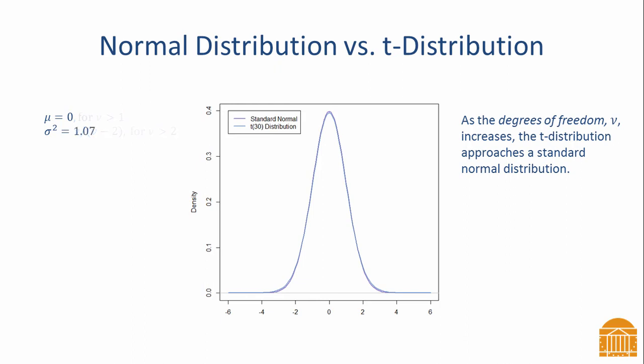A t-distribution with 30 degrees of freedom has a variance of 1.07, which is slightly larger than a variance of 1 that we have with the standard normal distribution. It is not until the sample size is extremely large that the two distributions become the same.